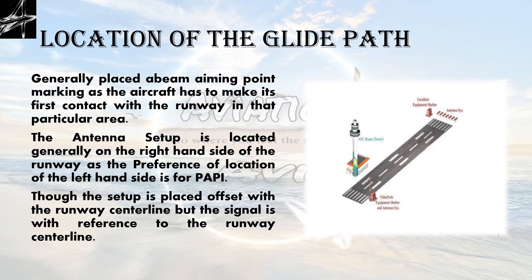The Glide Path antenna is located generally on the right-hand side of the runway, as the preference for the left-hand side is for the PAPI. Though the setup is placed offset with the runway centerline, the signal is referenced to the runway centerline — so while landing, the aircraft comes and lands on the aiming point as close as possible.